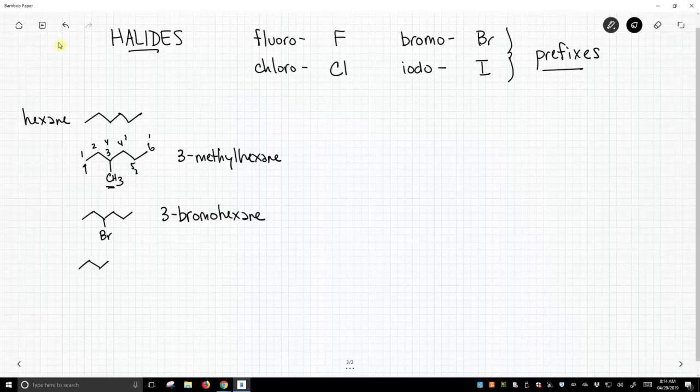And if we were to add, let's say, we had a methyl and a bromine. Well, on the left-hand side of the molecule, if we number from this side, we hit our first branch earlier, carbon 2. So we'll number from the left going to the right. That's our longest continuous chain. It's still a hexane.